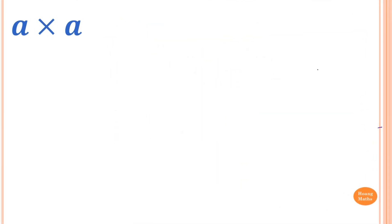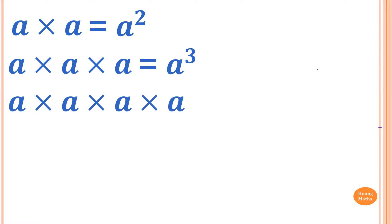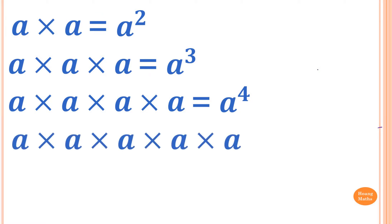A times A is A squared. A times A times A is A to the power 3. A times A times A times A is equal to A power 4. Similarly, A times A times A times A times A is A to the power 5.